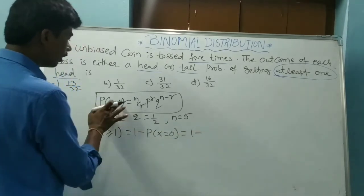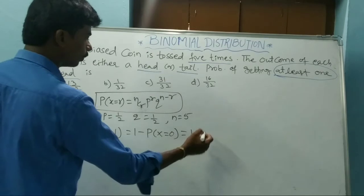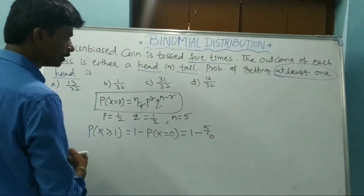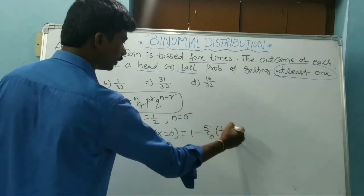One minus, see R equals zero, N equals five. Five C zero. Five C zero. What is that? One by two to the power of zero...